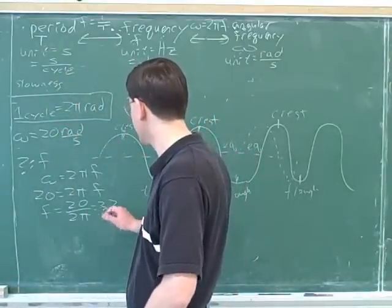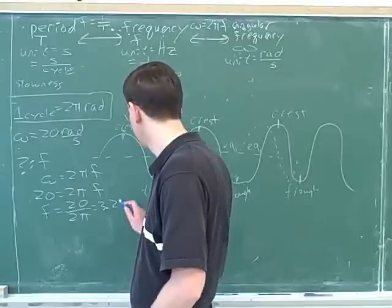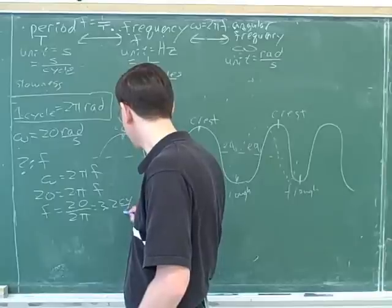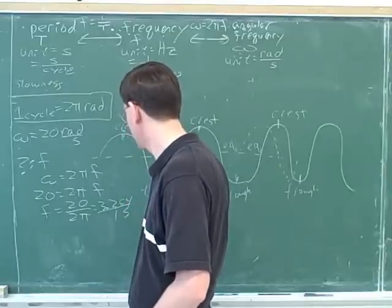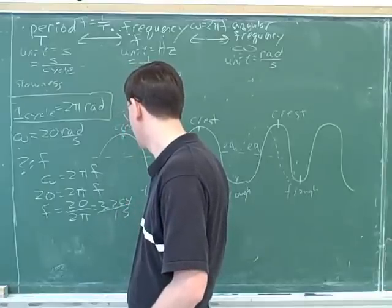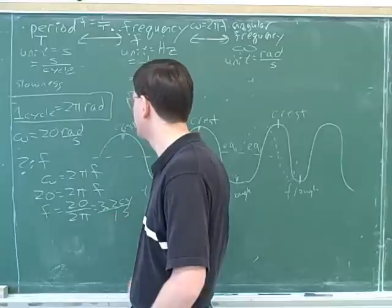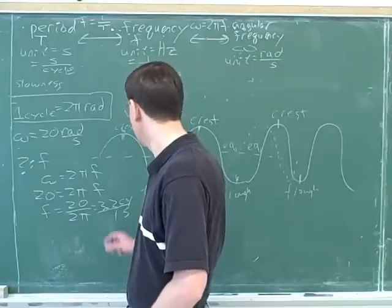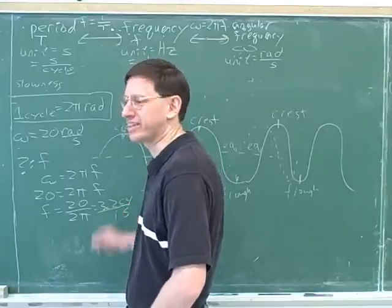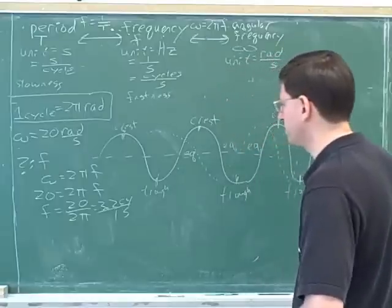And what would be a better, more interpretable form of Hertz? Cycles per second. Good. So how would we interpret this number? For every one second, you get 3.2 cycles. Right, or it takes a second to go through, I should say, in a second we can go through 3.2 cycles.